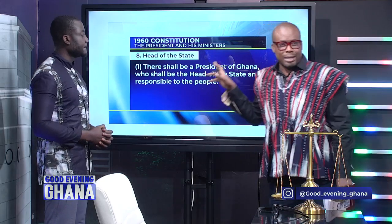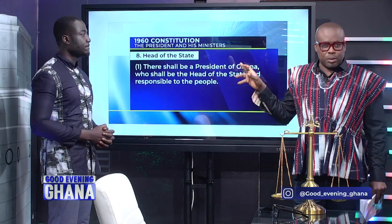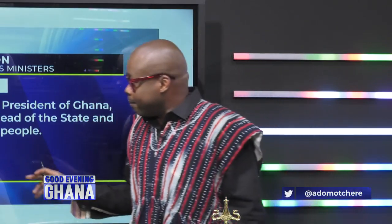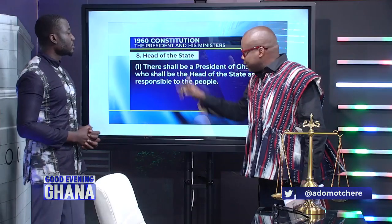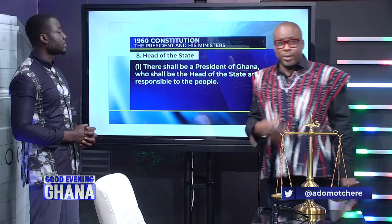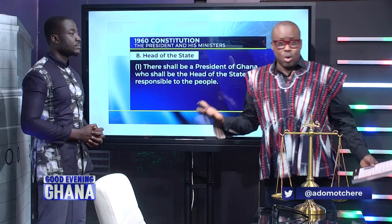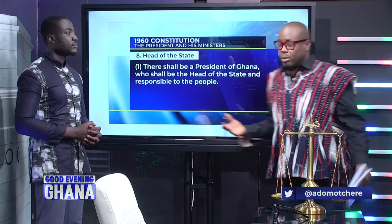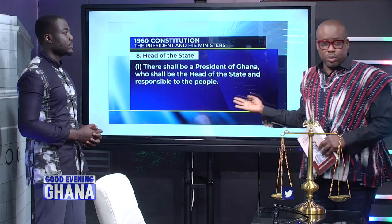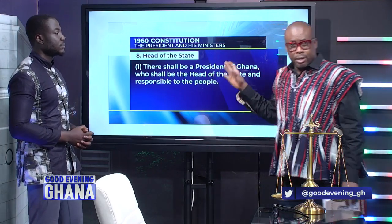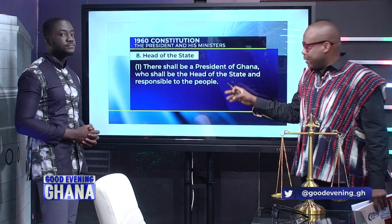We are looking at the 1960 Constitution that was promulgated by the Osage 4, and we are just telling the story. This is the 1960 Constitution, and we expect that you will learn from it if you haven't seen it before. When we saw it, we were surprised, but it's the first Republican Constitution of Ghana.